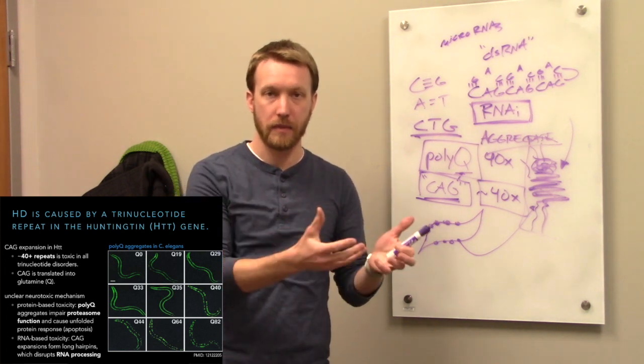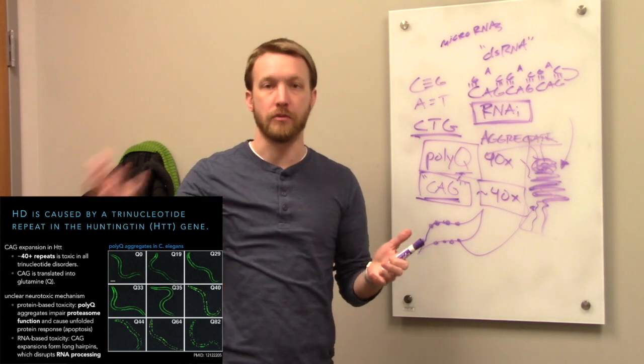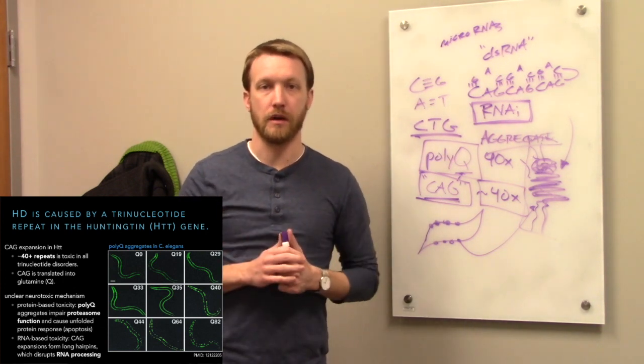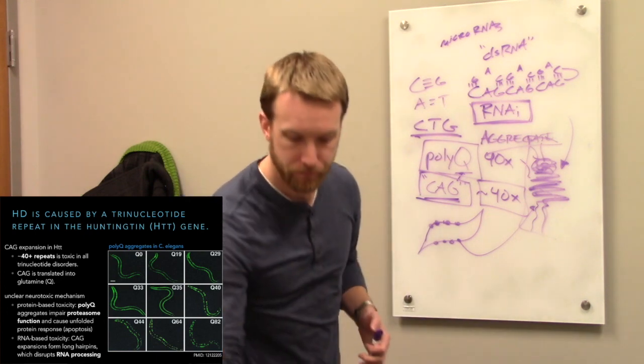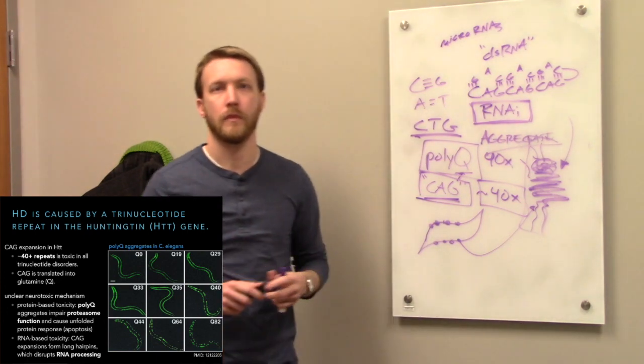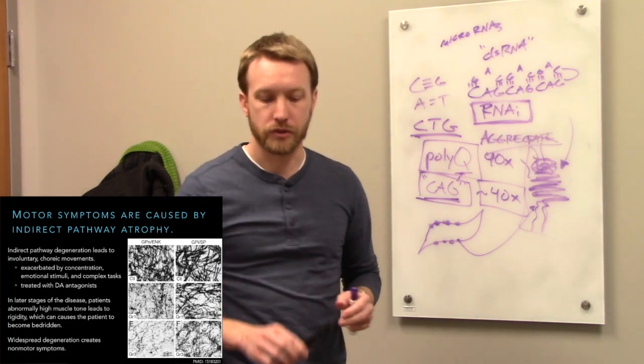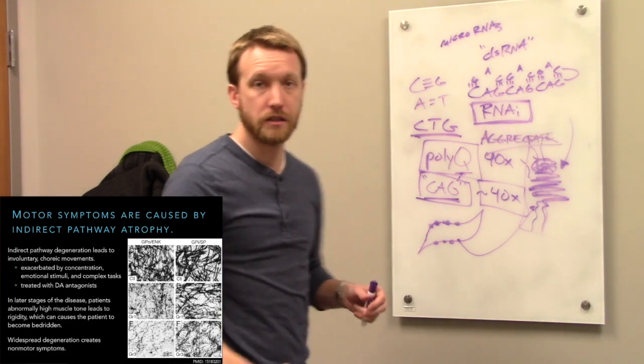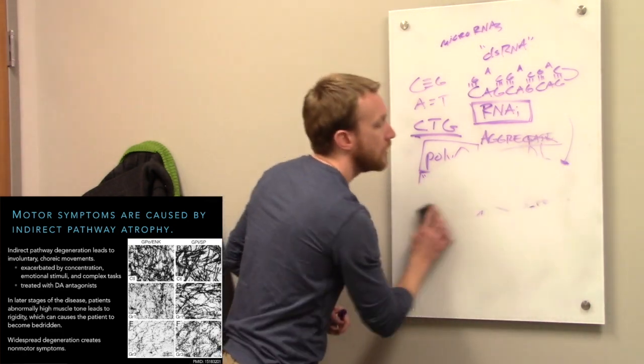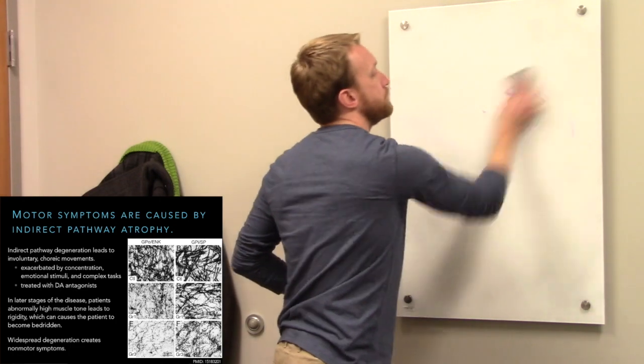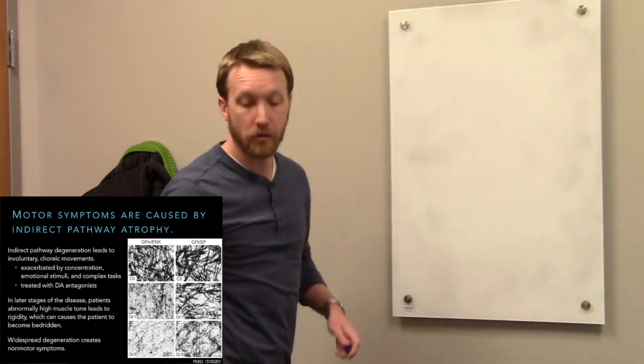Both of these have basically the same mechanism. Either we're unable to properly create RNA, or we're unable to properly create protein. And either way, the end product is the same. Cell death. If we can't make our RNAs properly, then we don't make proteins properly. If we don't make proteins properly, we don't do anything.